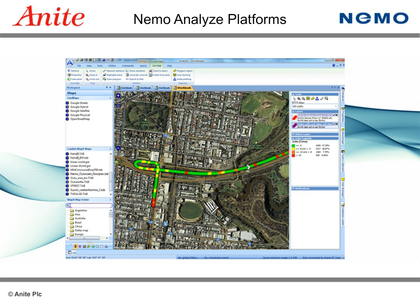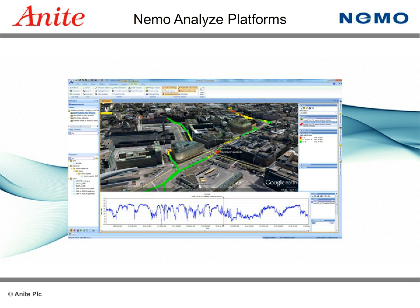The NEMO Analyze Standard version is the perfect solution for most common post-processing and statistical reporting tasks. It comes preloaded with a full set of graphs, maps, and other data views. Additionally, statistics can be given based on operator, log file, time frame, and other attributes. The standalone version comes preloaded with customizable workbook templates and report templates.